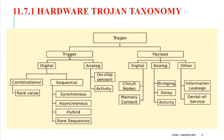Now, we are going for the trigger part. The trigger part is divided into two different types: one is going to be the digital signal and the other is analog. So any digital signals or analog signals — if you are going for the digital signals, you are having the combinational and sequential.